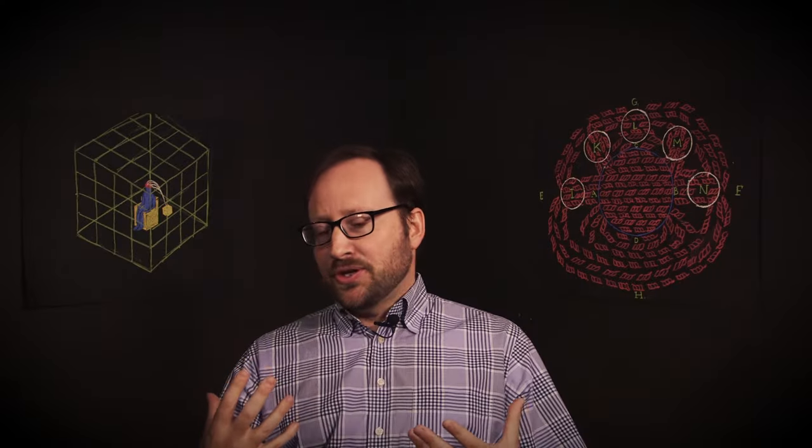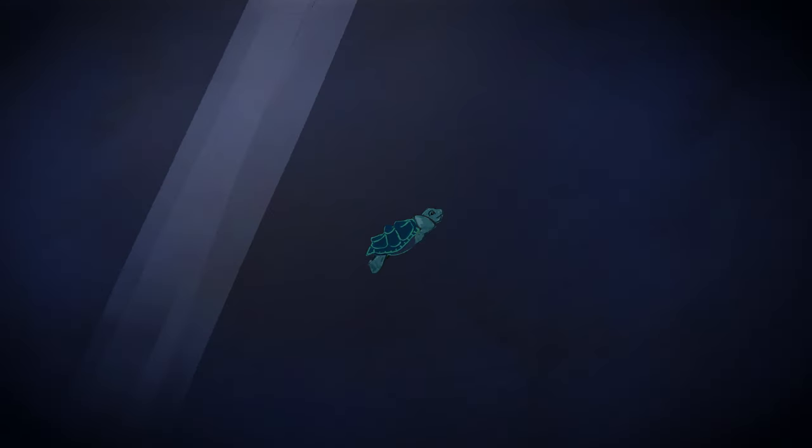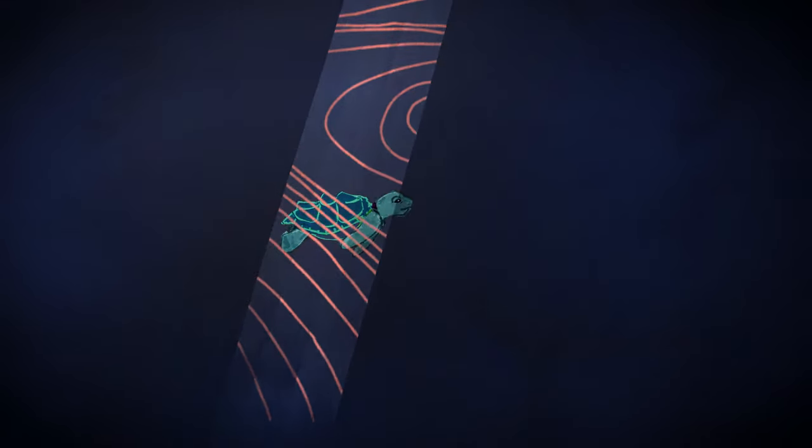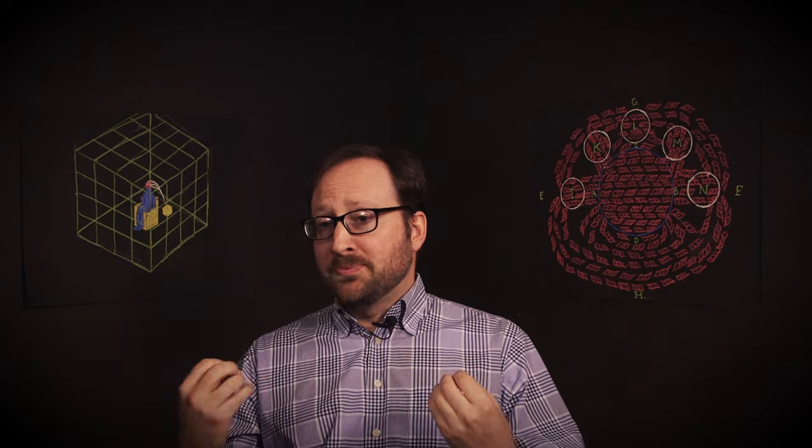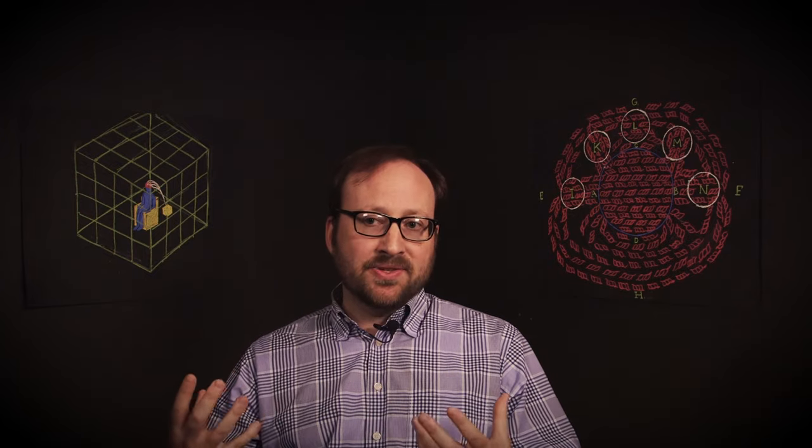With magnetoreception, you don't know where to look. Magnetic fields pass invisibly through the entire body. So researchers don't know exactly where these magnetite particles or cryptochromes would be attached to particular cells.